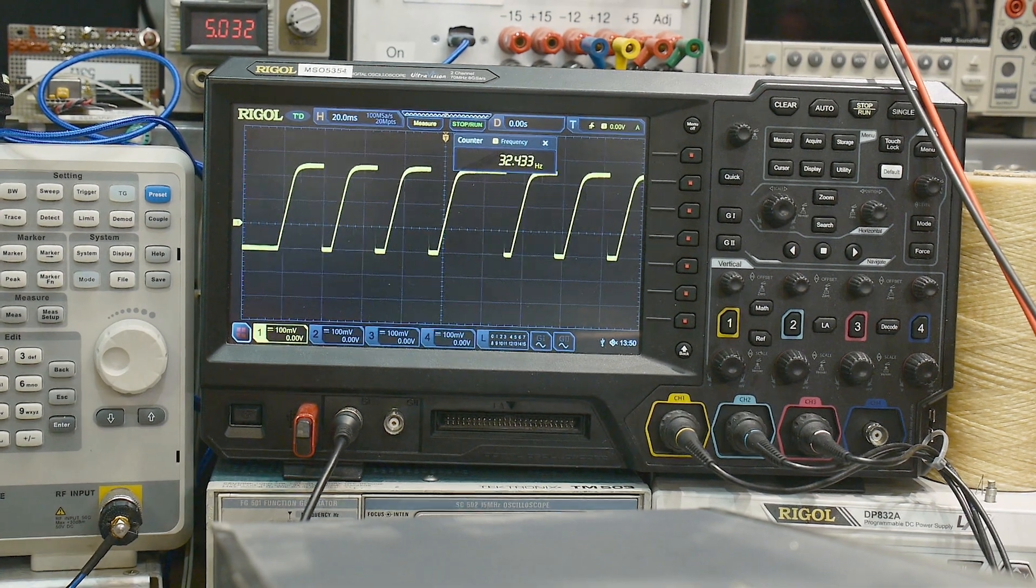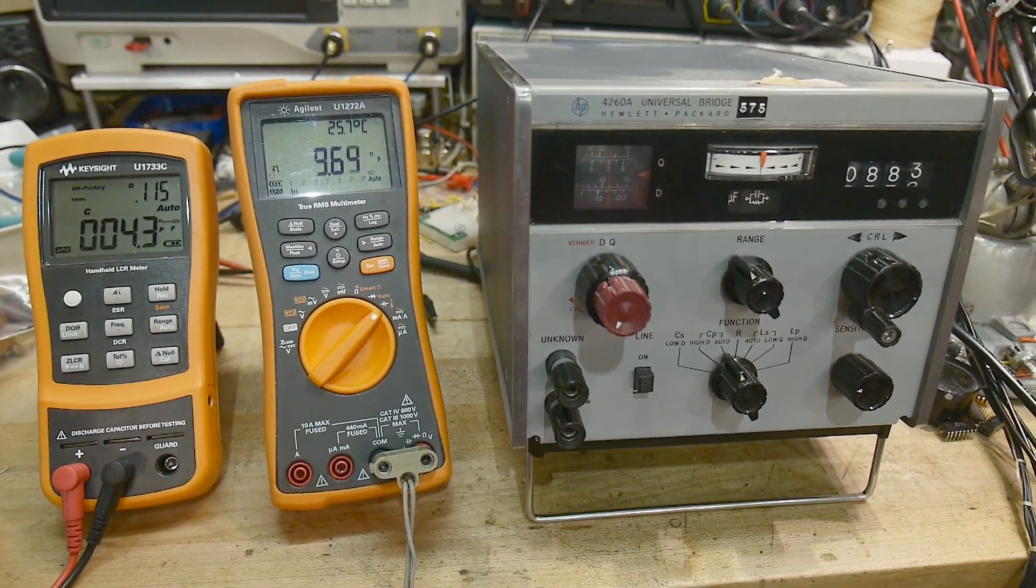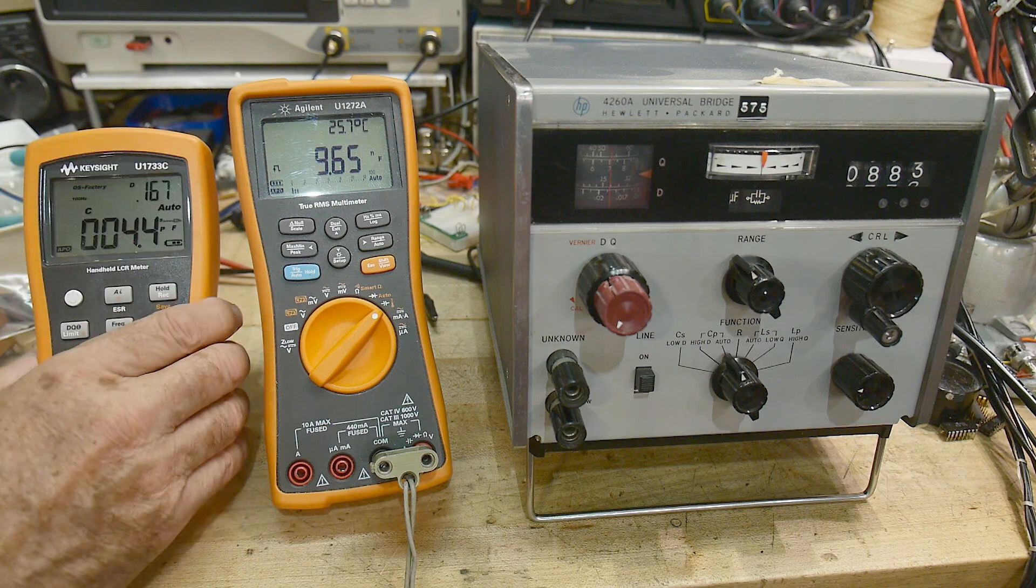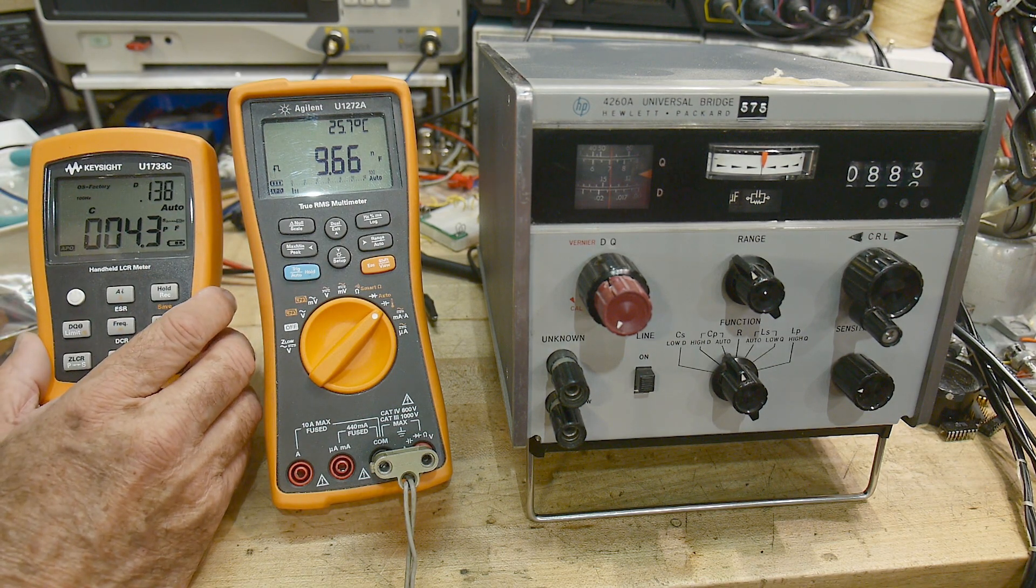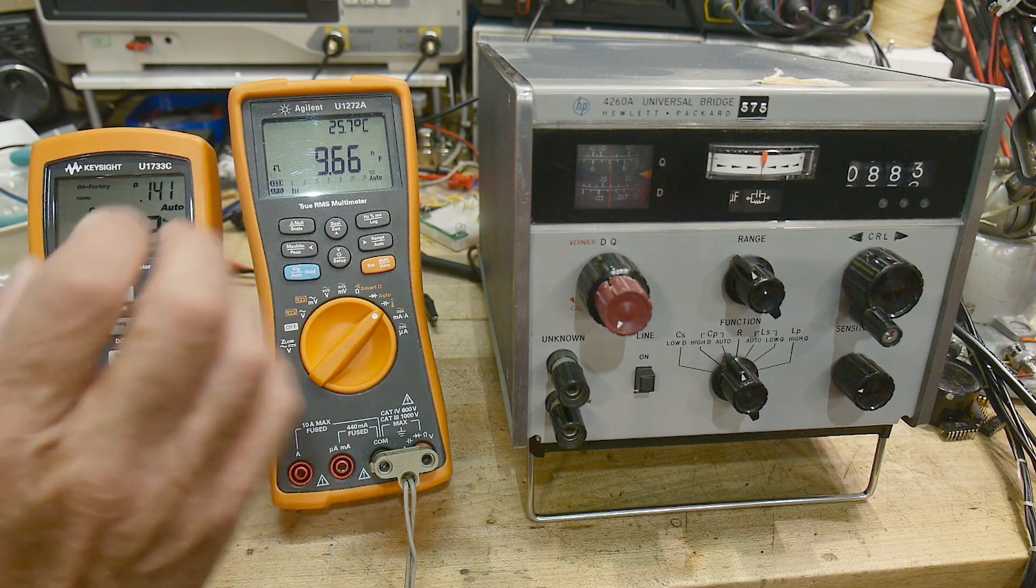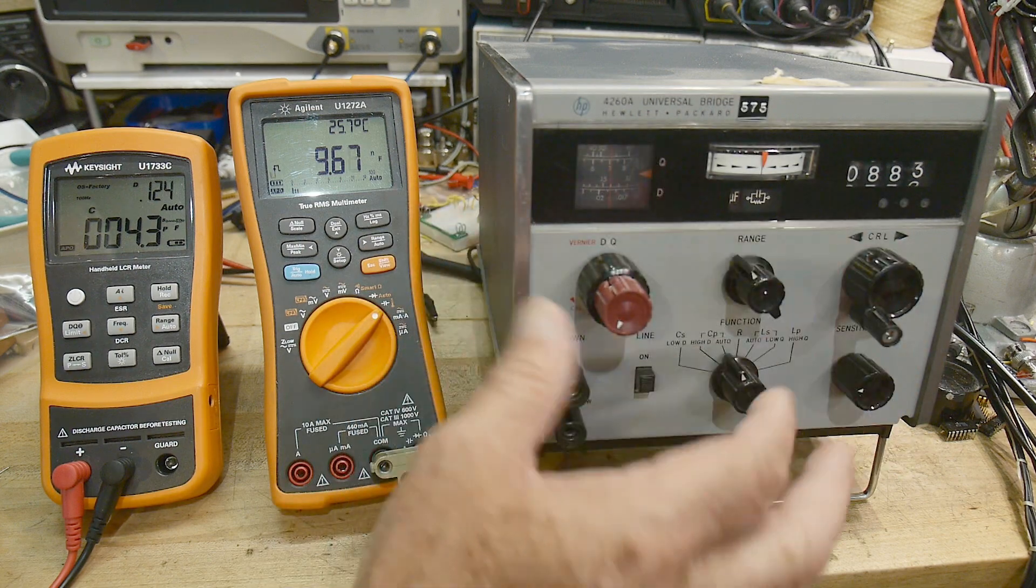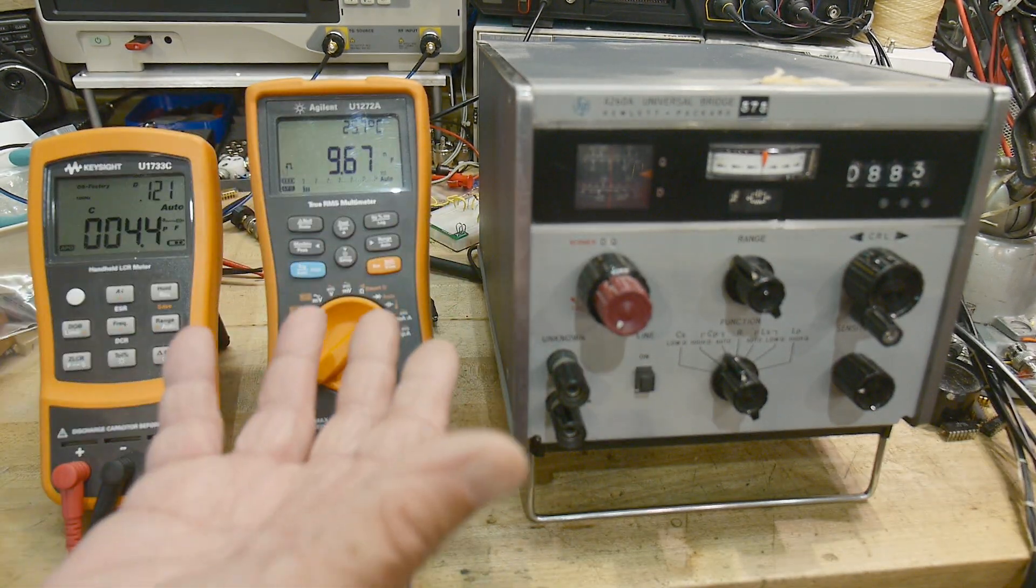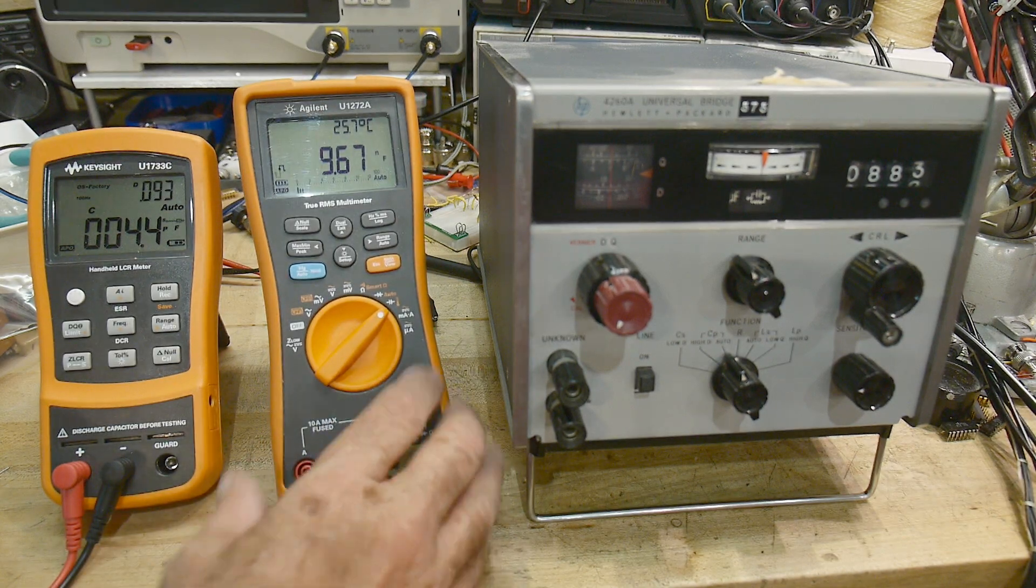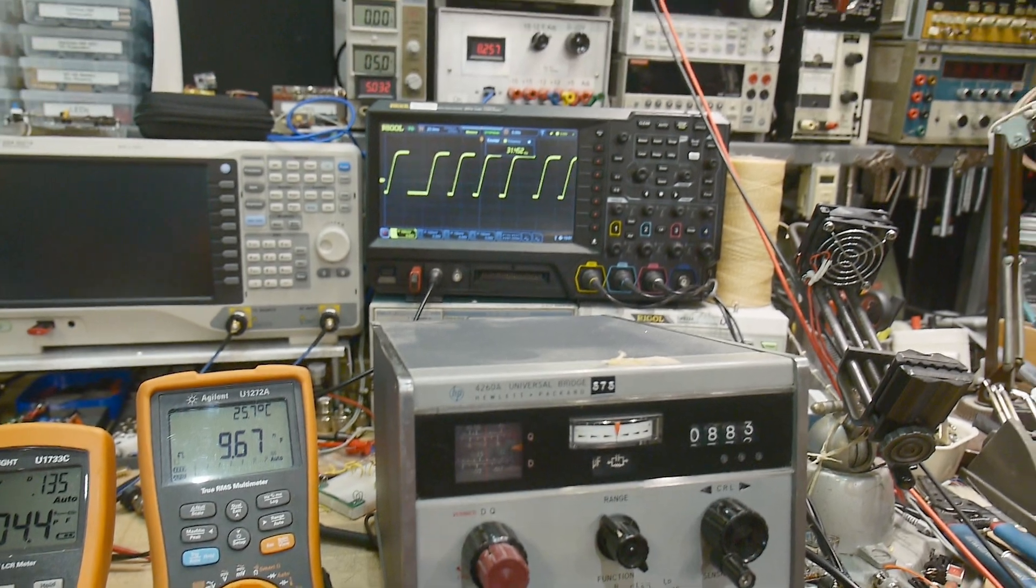So anyway, I thought it'd be interesting to look at that, give you an idea that not everything measures things the same way. This measures it by outputting a sine wave, measuring the phase shift in a bridge. And this is definitely a bridge and you zero it so the bridge is balanced. And then this thing outputs an RC time constant and that's the way it measures it. So anyway, fun fact, fun video for the day.